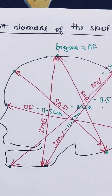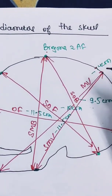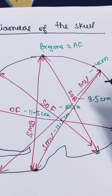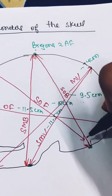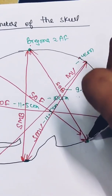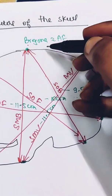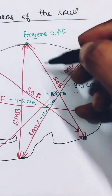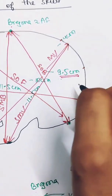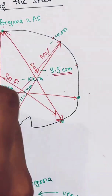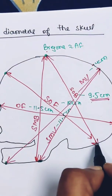In this video I will make you learn the important diameters of the skull. The first important diameter is the suboccipitobregmatic diameter. It extends from the nape of the neck — that is the subocciput — to the center of the bregma, which is also called the anterior fontanel. The suboccipitobregmatic diameter is 9.5 centimeters.